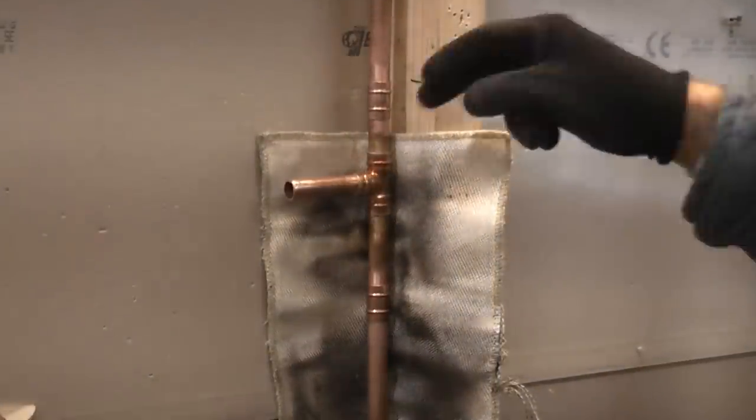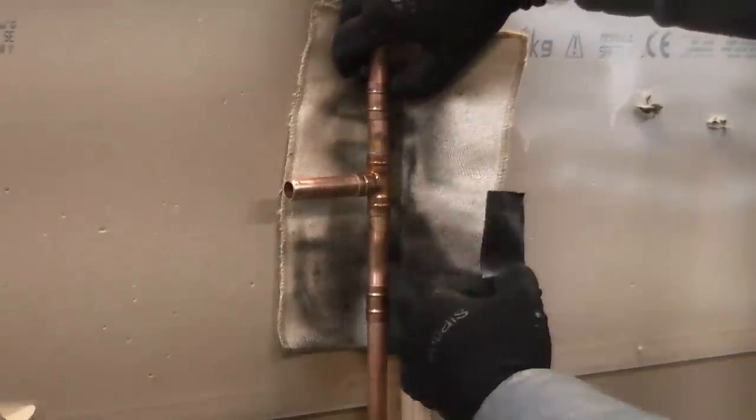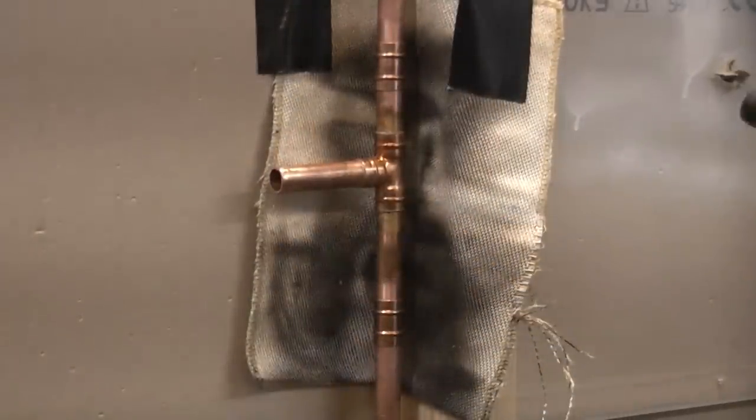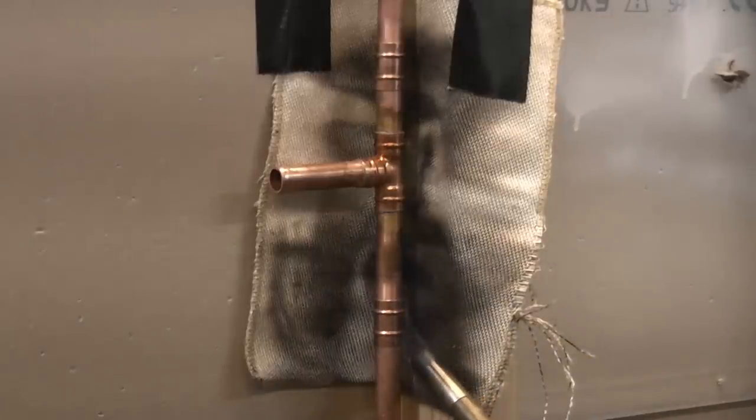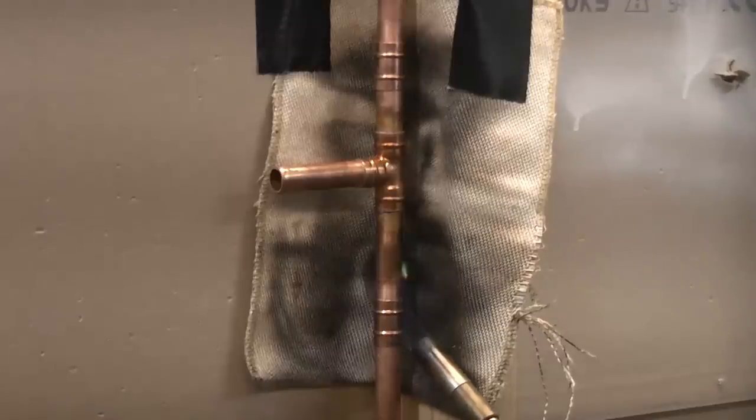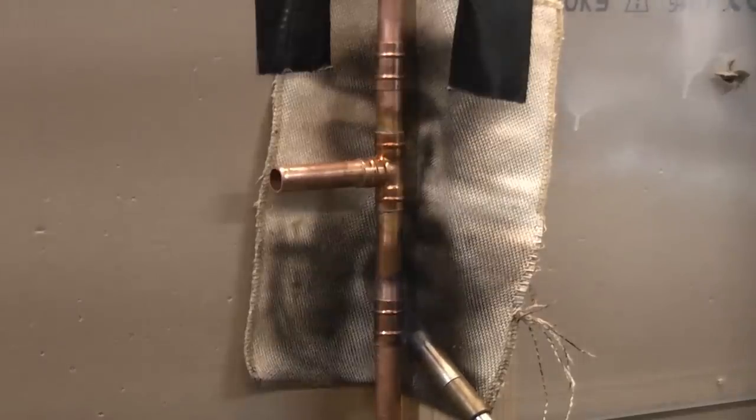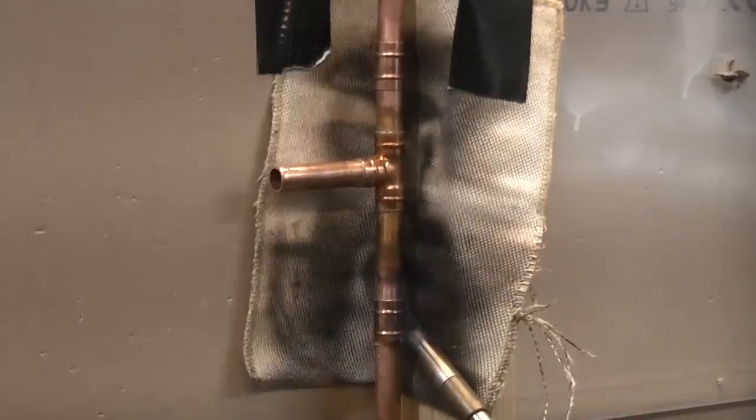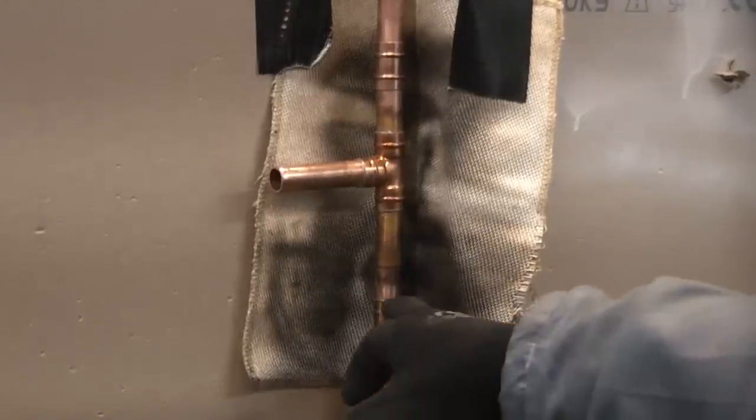Because we're soldering near the timber and plasterboard I'm just going to use the heat mat. I'm just going to tape that in position to prevent anything from getting scorched or set on fire. Again, all we need to do is take the blow torch and apply a little bit of heat to each of the fittings. You can remove the heat once you see the solder exiting from the fitting.